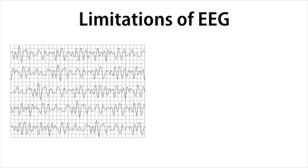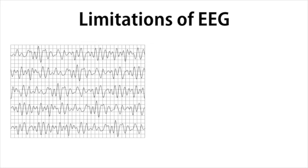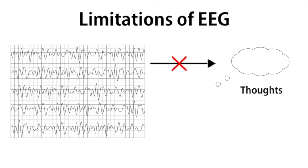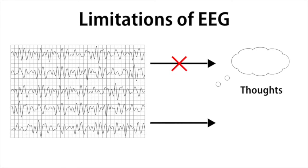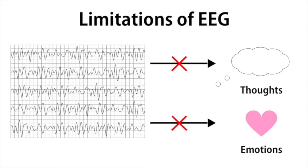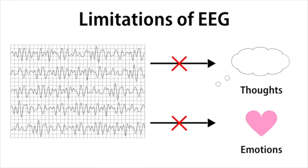However, EEG does have its limitations. We may be able to tell what brain regions are active, but we usually cannot determine specific details about internal processes such as the thoughts or emotions that someone is experiencing. Nevertheless, EEG is a very valuable tool for studying the human brain.